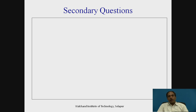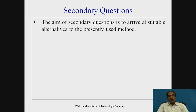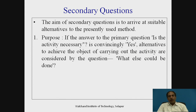Once the two primary questions are completed, we move to the secondary questions for those same two areas. The aim of the secondary question is to arrive at a suitable alternative to the presently used method. At the end of the secondary questioning, one must have various alternatives as answers. For example, taking Purpose: if the answer to the primary question confirms the activity is convincingly necessary, then alternatives to achieve the objective are considered by asking 'What else could be done?'